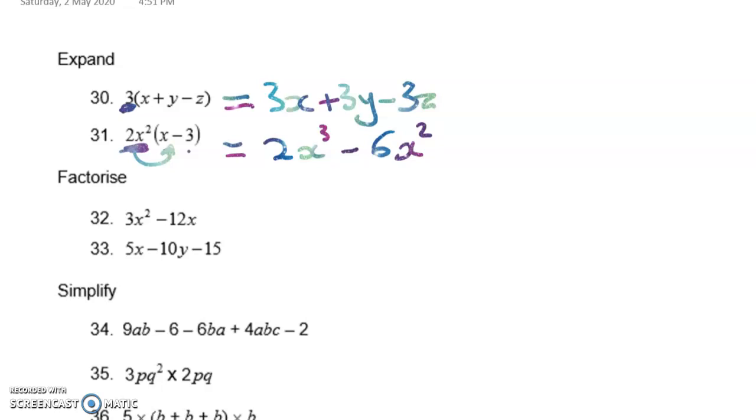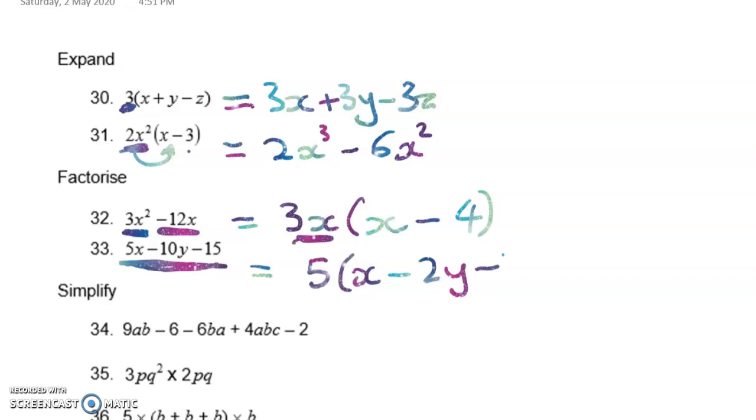Next up, we have to factorise. When we factorise, we're working backwards. First, we look at the coefficients. We look for common factors in the numbers. Finding the highest common factor of 3 and 12 gives me 3. Next, we look at the variables. We've got x² here and we've got x here. What's the highest common factor? Well, it's x. Now we just work backwards and see, what do I have to times this by to get back to 3x²? Well, I have to times it back by x. Now, what do I have to times 3x by to get -12x? And it will be -4. Let's look at number 33. 5x - 10y - 15. The only common factor here is 5. So my answer is going to be 5 times (x - 2y - 3).